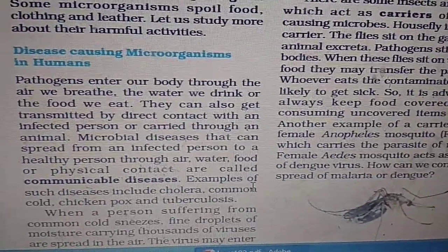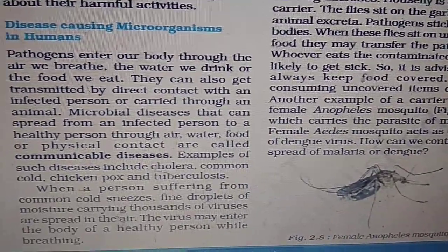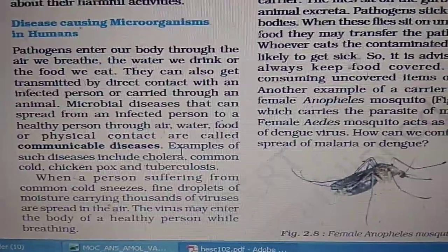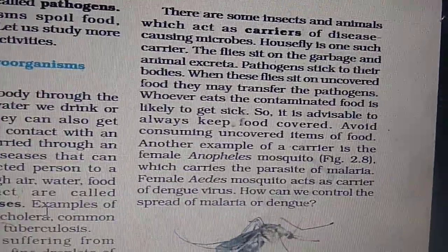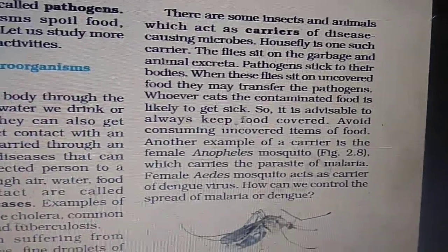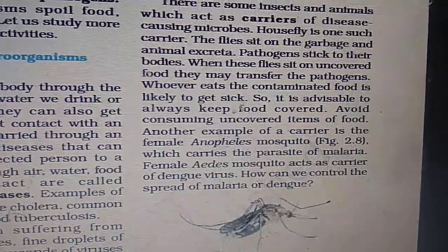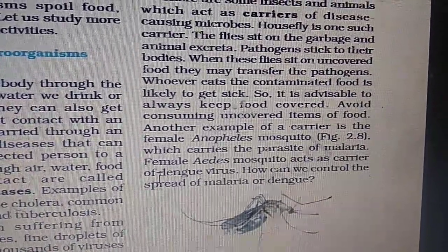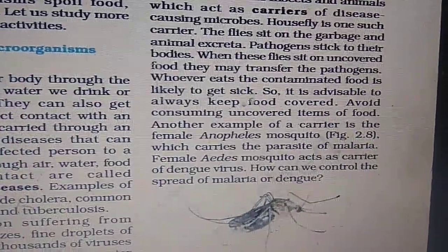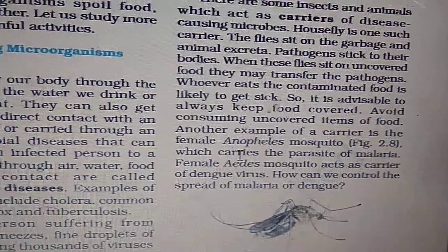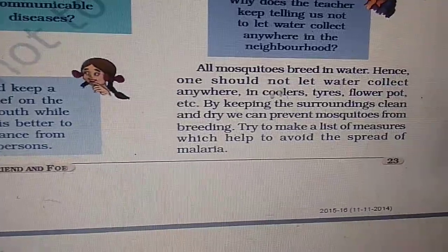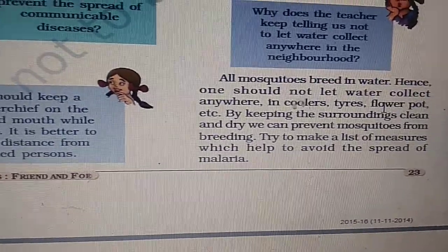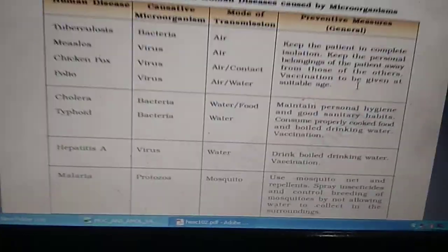Harmful microorganisms are known as pathogens — they cause communicable diseases such as cholera, cold, chicken pox, and tuberculosis. When a person suffering from common cold sneezes, fine droplets of moisture containing thousands of viruses spread in the air and enter healthy persons. Some insects and animals are carriers of microbes. The house fly is one example. The Anopheles mosquito carries the parasite of malaria. The female Aedes mosquito acts as a carrier of dengue virus. We should not let water collect, because mosquitoes breed in water.